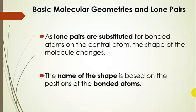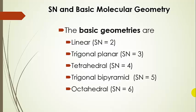We're going to substitute lone pairs for bonded atoms on the central atom, and the molecule shape is going to change. The name of the geometry for that molecule depends on the positions of the bonded atoms, not lone pairs — so we pretend we can't 'see' those. We name the shape based on actual bonded atoms.